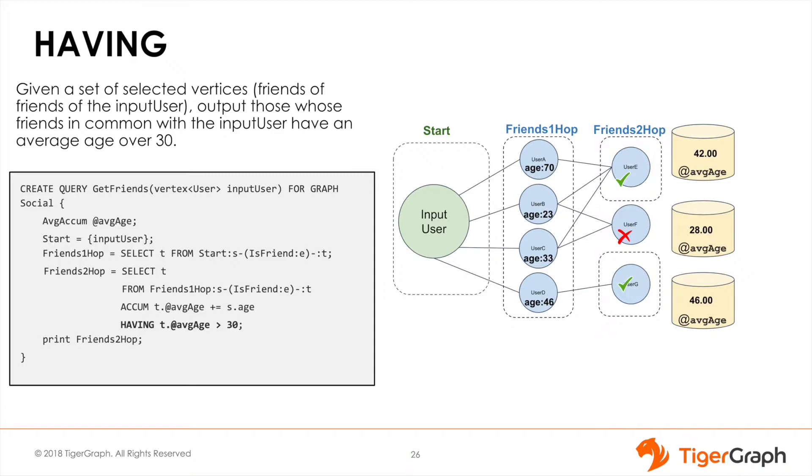It is very similar to the WHERE clause, except the HAVING clause only has access to the vertices that have been selected and their attributes, whereas the WHERE clause has access to the source vertices, edges, and target vertices.